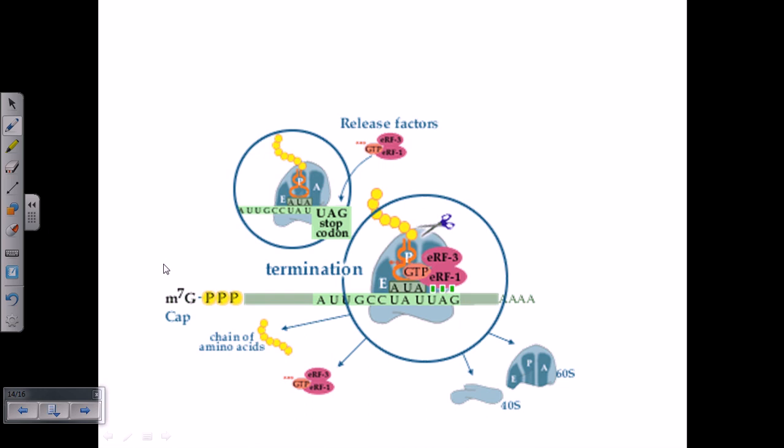If you look at here how the peptide bond is cleaved, you can see this is the scenario. Once it reaches the stop codon, remember this is the stop codon, which is UAG for example in this case.